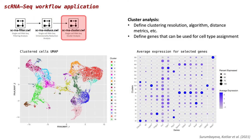Once we finished with the dimensionality reduction and obtained UMAP, we moved to the cluster analysis. In this step, we clustered cells using an array of different resolutions. For each resolution, we identified gene markers and built multiple gene expression plots. Altogether, it helped us to select the resolution that corresponds best to the cell types we expect to see in our datasets. Here we see the clustered UMAP and average expression plot for genes of interest. The results of this step can be used for differential expression or differential composition analysis, which are not covered in this talk.